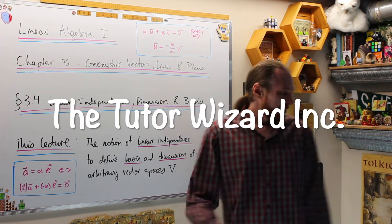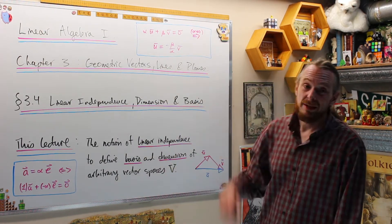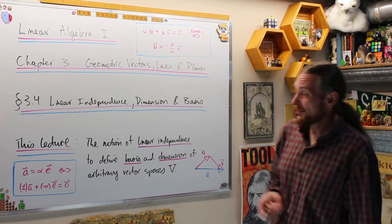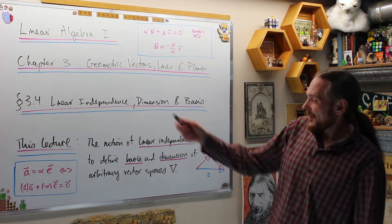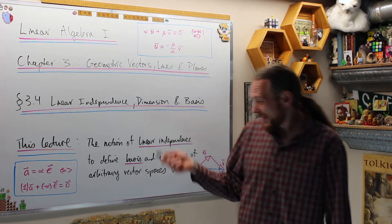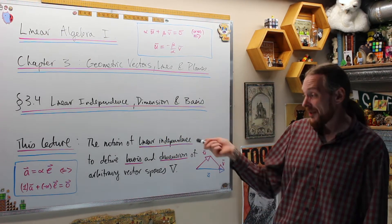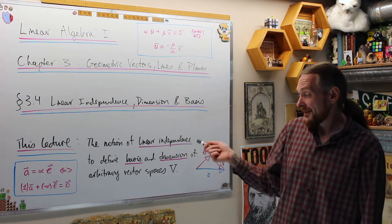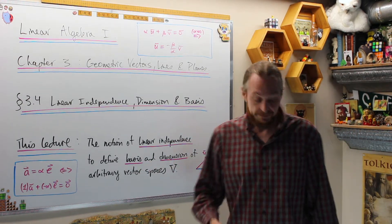Welcome back, this is the Tutor Wizard. I'm Adrian. Please subscribe right here. We're doing Linear Algebra 1. This is Chapter 3, Geometric Vectors, Lines, and Planes. Section 3.4 is Linear Independence, Dimension, and Basis. Specifically, this lecture we're going to give the new notion of linear independence, which will give us a way to define basis and dimension for arbitrary vector spaces. Let's get to it.